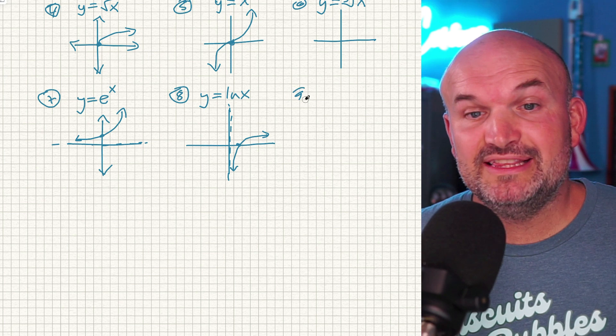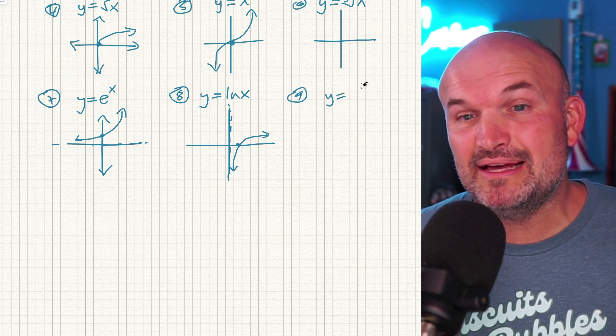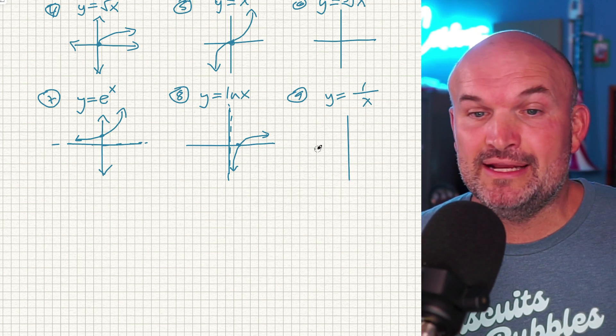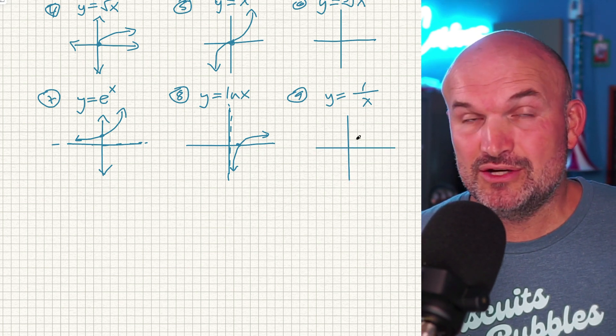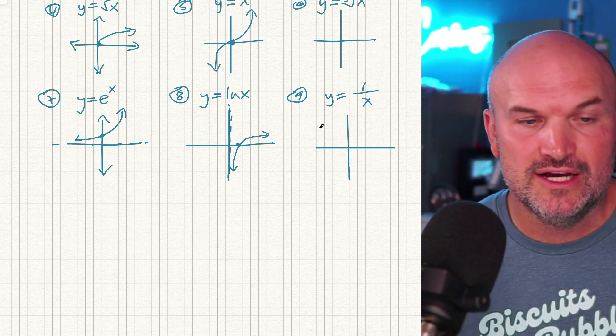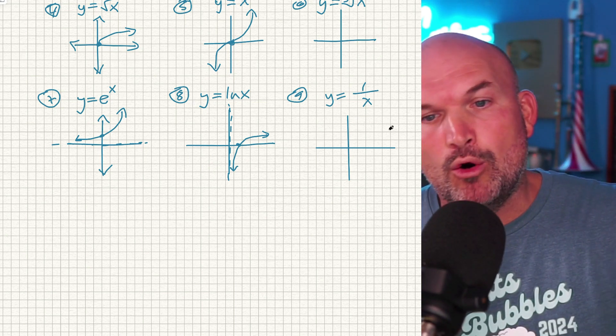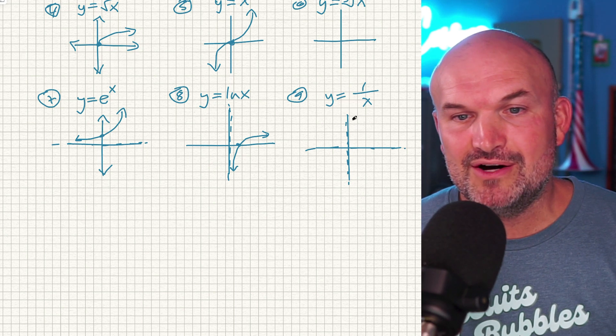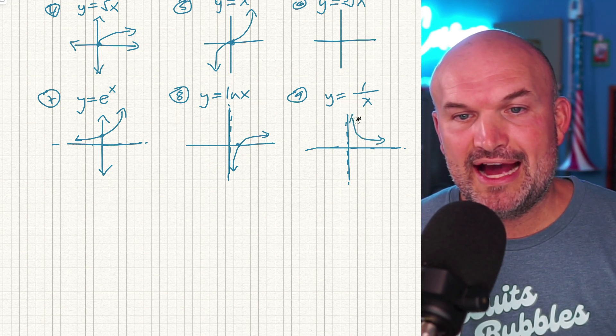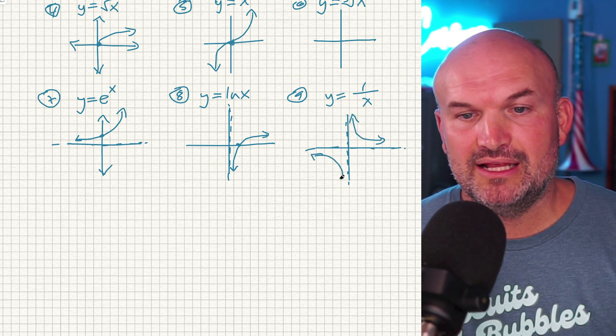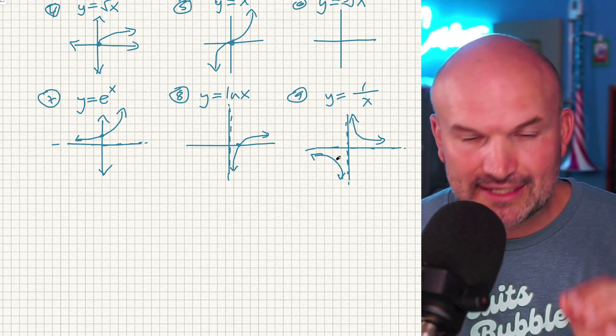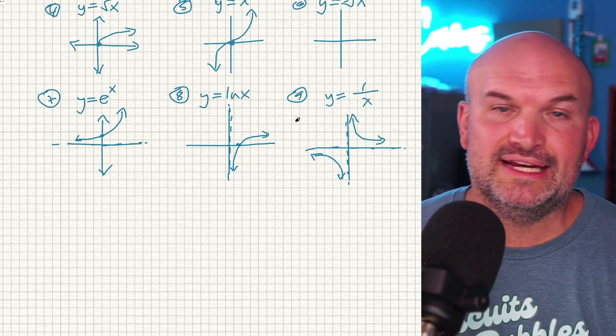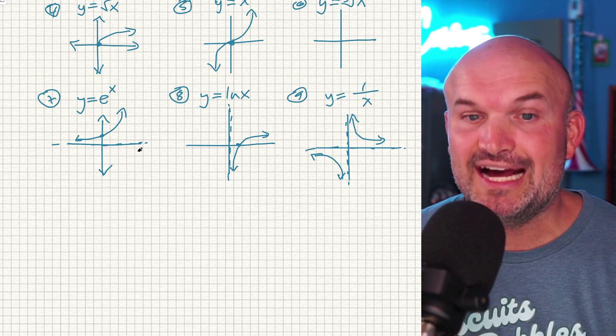Number nine is going to be the reciprocal graph. This is something that we spend a lot of time in algebra two on. And it's going to be something that's going to be really important in pre-calculus as well as in calculus. So it's very important to know that, to make sure you understand this. This has a horizontal asymptote at y equals zero. It has a vertical asymptote at x equals zero. And it's what actually we call a hyperbola. And so it's going to look something like this. This is a critically important one, especially once we start getting into more advanced problems in pre-calculus as well as in calculus.